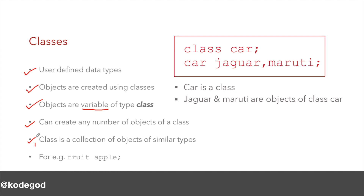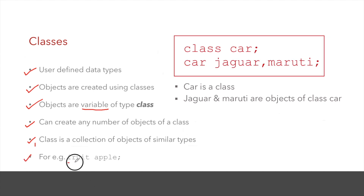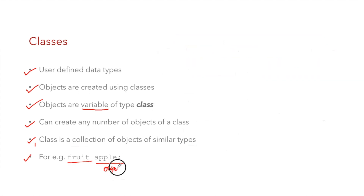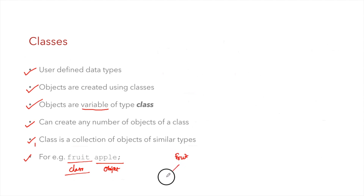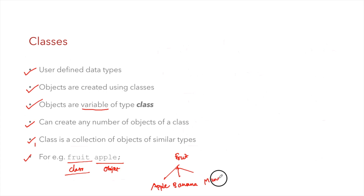Classes are a collection of similar data types. For example, Jaguar and Maruti are objects of class Car. Another example: Fruit is a class, and Apple, Banana, and Mango are all objects of class Fruit.